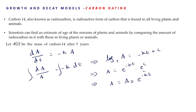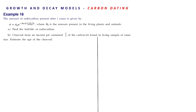Example 16: The amount of radiocarbon present after t years is given by A = A₀·e^(−(ln 2/5700)t), where A₀ is the amount present in living plants and animals. Find the half-life of radiocarbon.